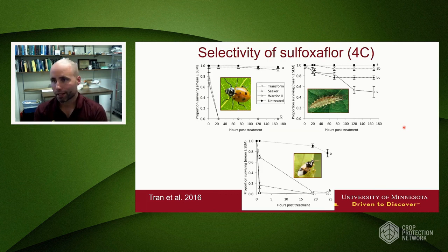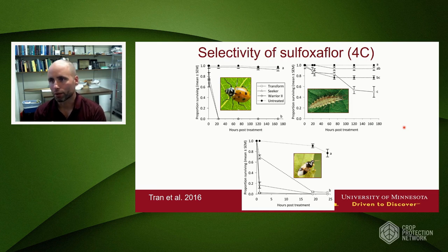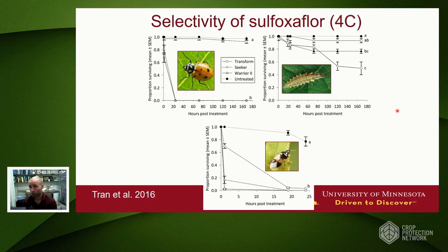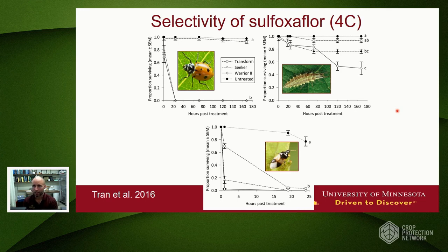An important aspect of the insecticides we use for soybean aphid is their spectrum of control. We want insecticides that do a good job killing the pest, but an added feature of some newer products is that they're more selective than traditional broad-spectrum insecticides. Organophosphates and pyrethroids do a good job killing pests but also kill a lot of natural enemies. A selective insecticide does a good job killing the pest while being much less toxic to predators and other natural enemies—selectively killing pests while leaving beneficial insects surviving.